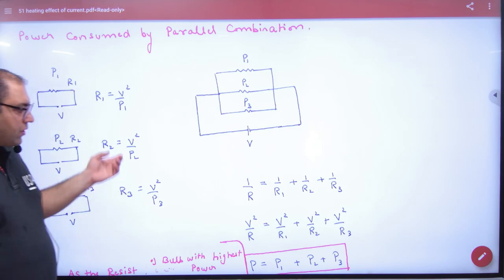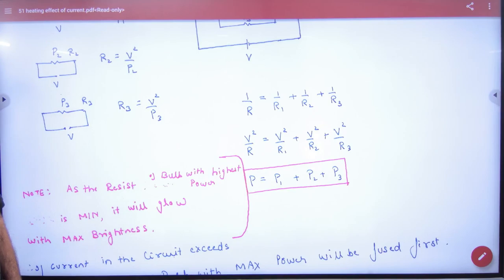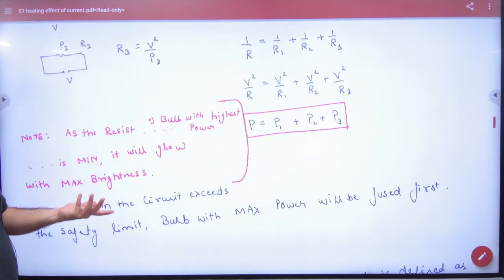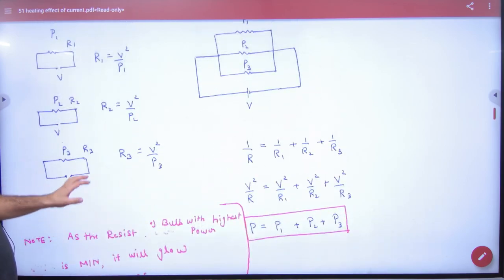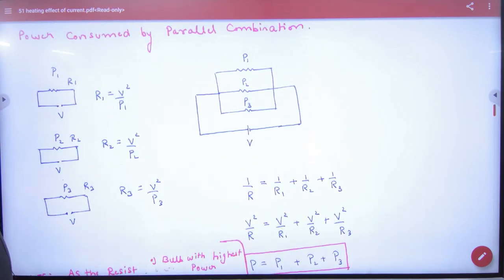In parallel combination, this formula has been noted. Now tell me, in parallel combination, what is the resistance? V² by P1, now V is the same.